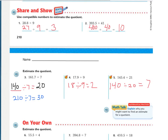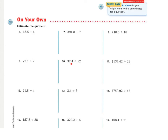For the on-your-own problems, look at number ten: thirty-two and four-tenths divided by fifty-two. Since the whole number thirty-two is less than fifty-two, you need to rename thirty-two and four-tenths as three hundred twenty-four tenths. Your answer will be in the tenths. Divided by fifty-two, use the compatible number fifty. Your answer will have zero whole numbers and will be in the tenths place. You may now begin working on the on-your-own and problem-solving sections after your exit ticket.